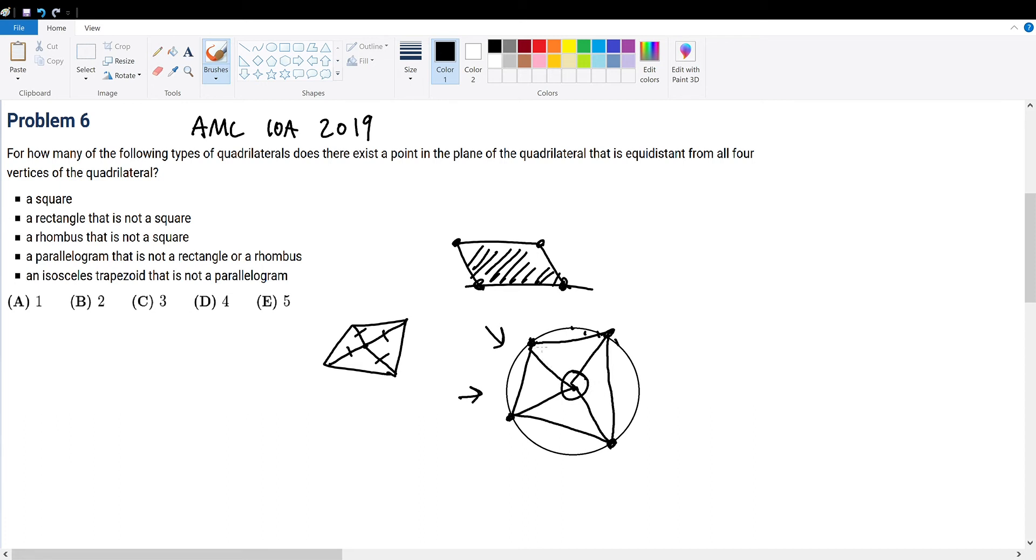Since the vertices of the inscribed quadrilateral touch the circle, each vertex of the quadrilateral is part of the circle. All points on a circle are equal distance to its center, or in other words, a point on a plane. Meaning if the shape is inscribable into a circle, then it's obvious that it will be equal distance to all points within the plane of the quadrilateral.